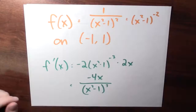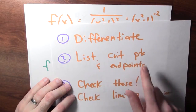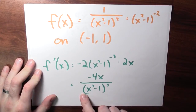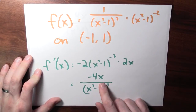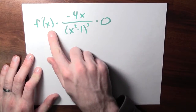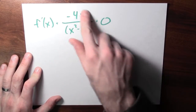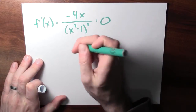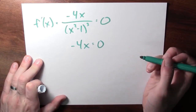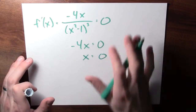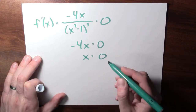With the derivative in hand, I can find the critical points. Those are places where the derivative doesn't exist or is equal to 0. Let's first think about when the derivative equals 0. It's a fraction, so that occurs exactly when the numerator is 0 — that is, when minus 4x equals 0, which means x equals 0. So the only place where the derivative is 0 is x equals 0.